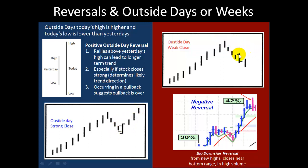You can also have a weak outside day. Here we have this pullback, we have an outside day whose range is larger than the prior day, and it's a very weak close in the bottom 25% — that can suggest the pullback is going to continue and might be more serious. You can also have an outside day that is a negative reversal, where the stock went way up and then reversed and also closed in the lower half of the range. Whenever you have a big downside reversal, especially from new highs, and it closes near the bottom of the range with high volume, you can expect more weakness and you want to manage your trade accordingly.